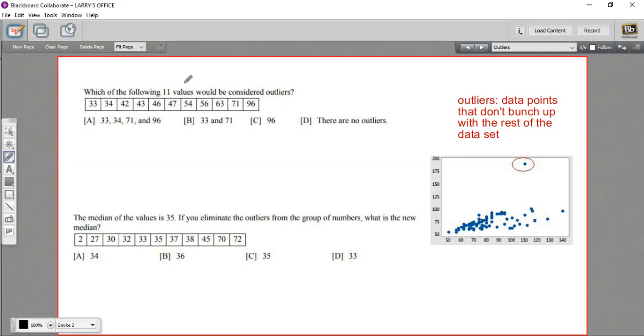It says, which of the following 11 values would be considered outliers? I'm seeing 33, 34, 42, a bunch of 40s, some 50s, a 60, we've got a 71, and we've got a 96.